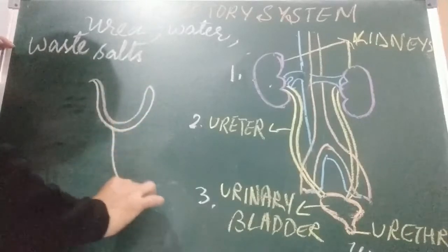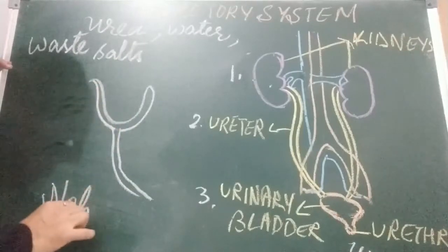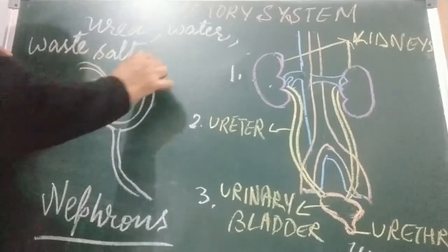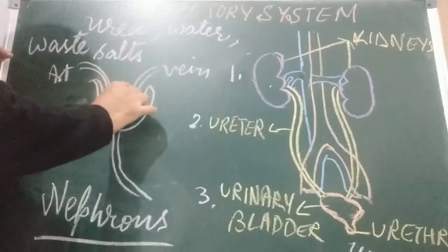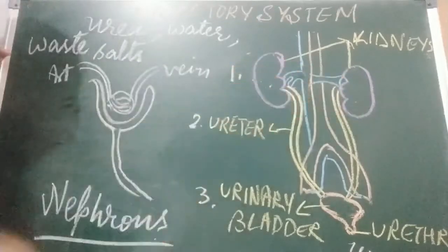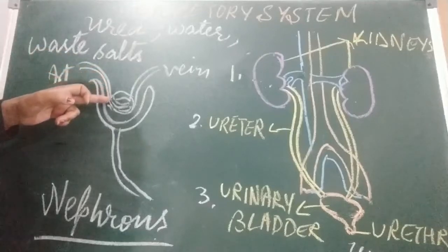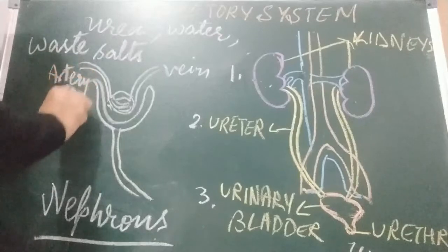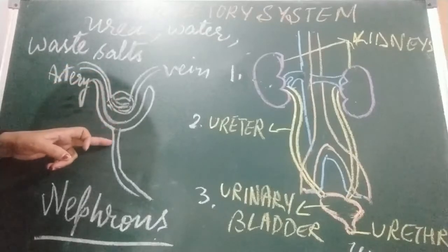A long tube is attached to each nephron. You are going to study about nephrons in detail in higher classes. Nephrons are filtering units and capillaries are present in them. There are millions of nephrons in the kidney and they act as filters. When blood reaches the two kidneys, it contains both useful and harmful substances.